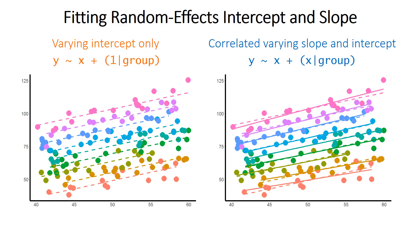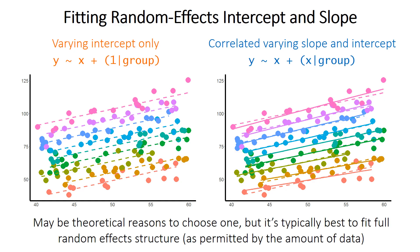You can also model slope and intercept without a correlation between the two. How do you choose? There may be theoretical reasons given the question, study system, and data to choose a particular approach for the random effects. But it's typically said that it's best to fit the full structure — the correlated slope and intercept variation — if it's possible with the data you have. We'll come back to that later, because there could be problems fitting this more complicated model, and if there are, you can always investigate a simpler model.